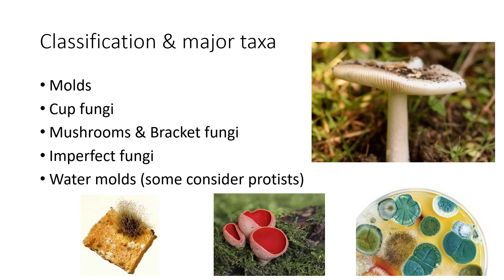There are really five main groups of fungi. The water molds — some don't consider true fungi; most biologists consider them a type of protist. The imperfect fungi have never had sexual reproduction observed, though most biologists think they probably lost it or it's just never been observed. Other than that, they're classified as types of molds, cup fungi, and mushrooms and bracket fungi. Those are the five major phyla of fungi.